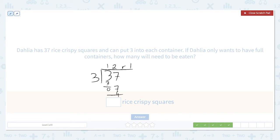So 12 full containers, those don't matter for this problem. What matters is the remainder of one Rice Crispy square.